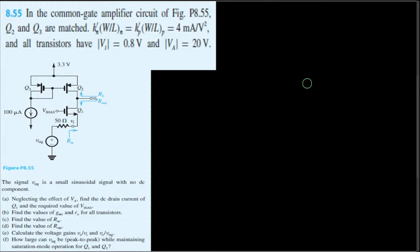This question is asking about the common-gate amplifier circuit of Figure P8.55. Q2 and Q3 are matched, and k'_n(W/L)_n equals k'_p(W/L)_p, which equals 4 mA/V². All transistors have V_t equal to 0.8 V and V_A equal to 20 V.